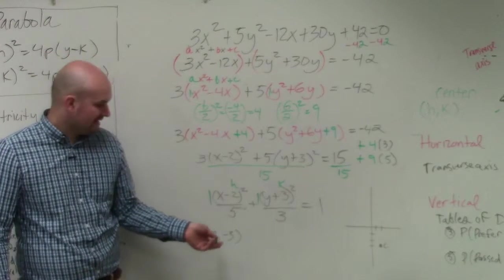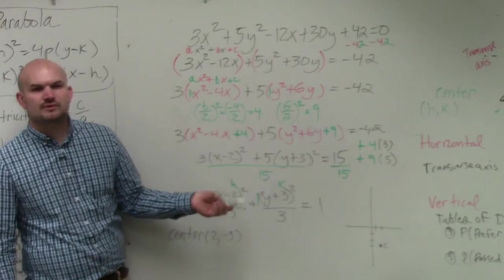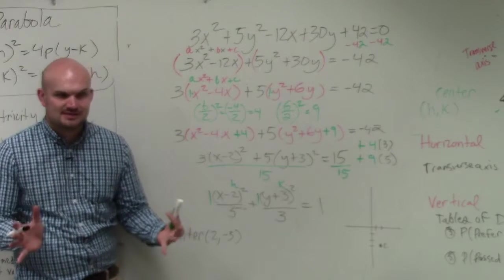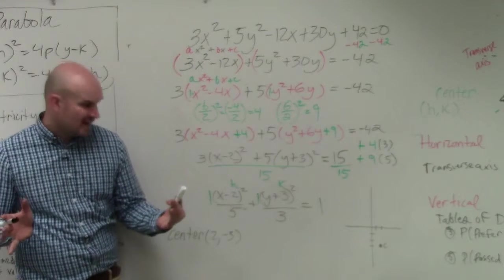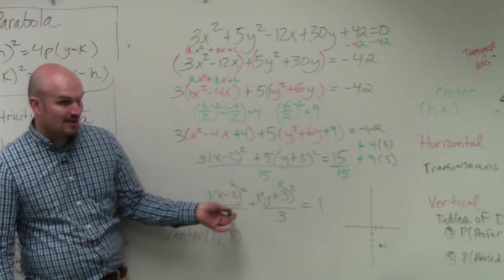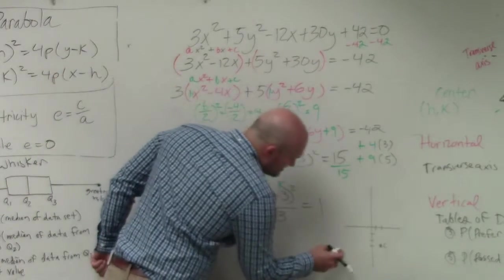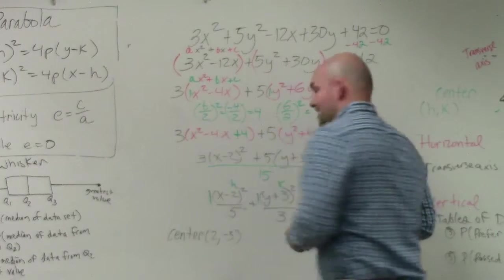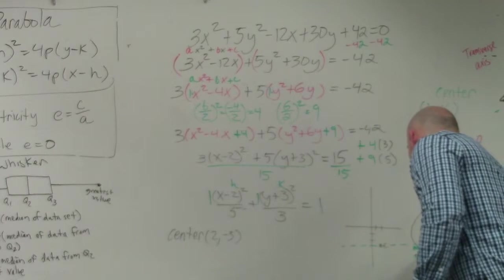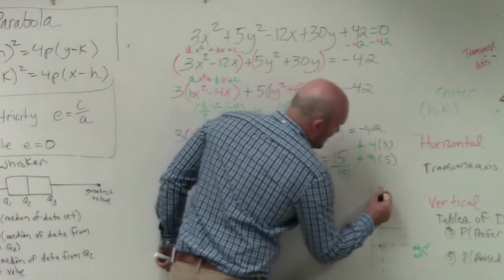Does everybody understand how I got (2, negative 3)? Now that we found the center, we need to find the major axis. A is always bigger than B. So which one is A squared? 5. Is A squared under the x or the y? X. So therefore the major axis is horizontal. That's my major axis.